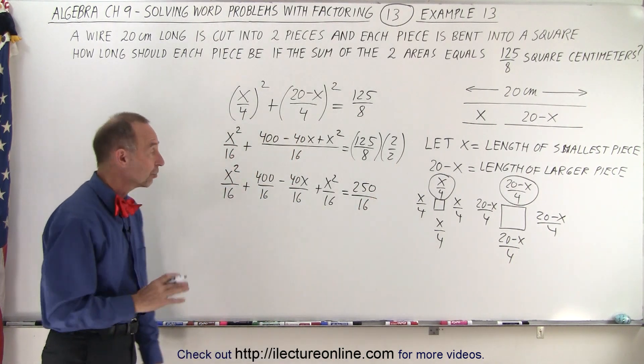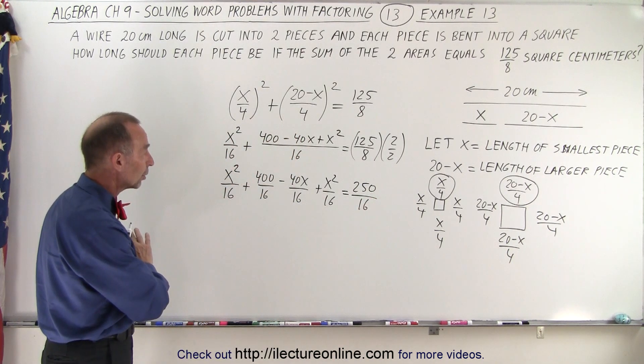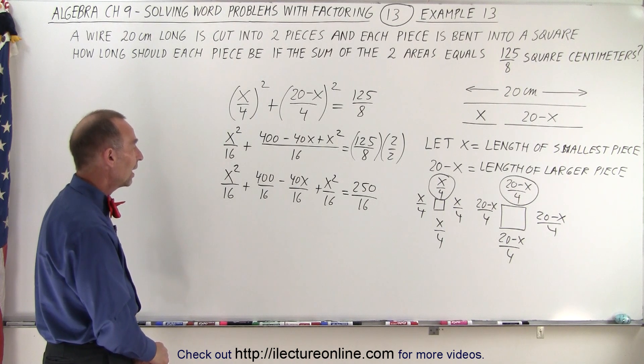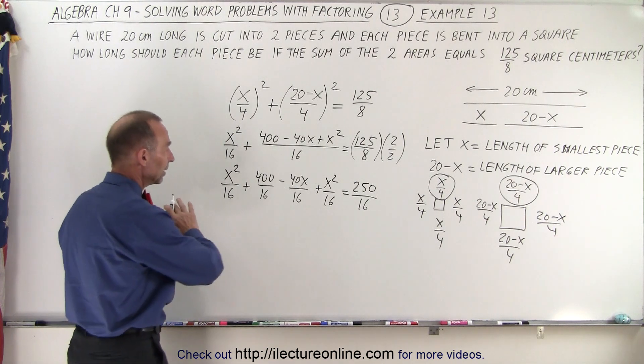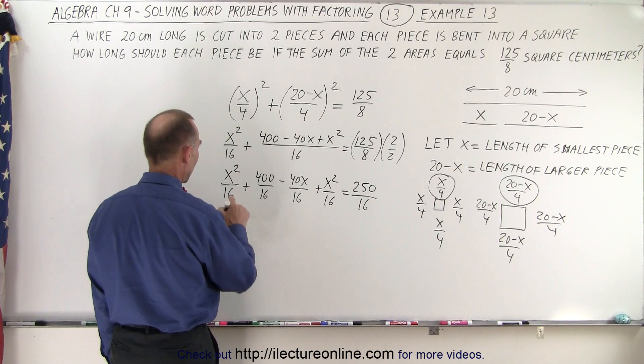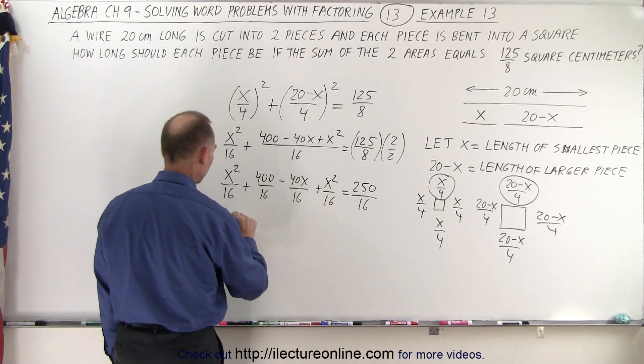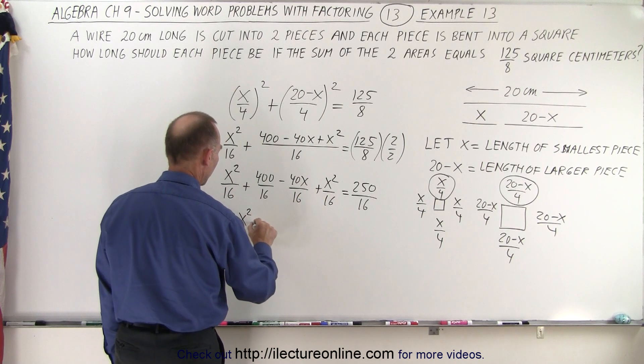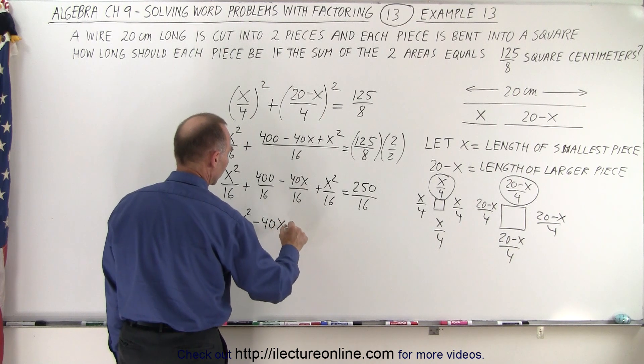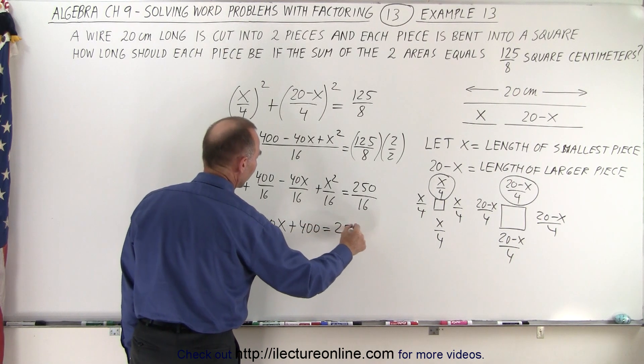So now you can see that everything is over 16, so we can go ahead and multiply both sides by 16. And when we do that, we get rid of the denominators. So now we have x squared plus x squared which is 2x squared minus 40x plus 400 equals 250.